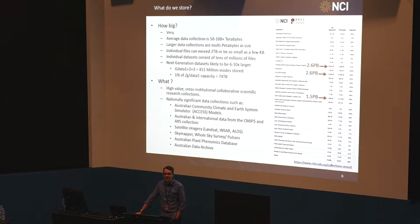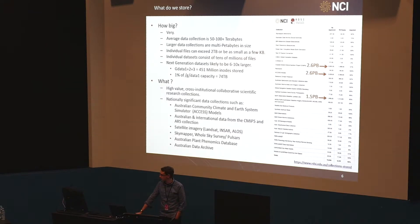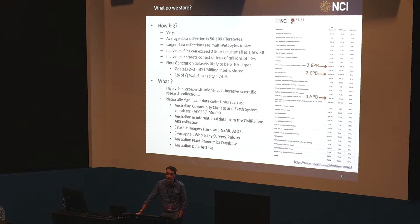One of them is currently sitting at 3.4 petabytes of GDATA3. File sizes can range from a few kilobytes to a few terabytes. We're storing 451 million items collectively across the GDATA file systems. To put that in perspective, 1% of GDATA1 is 74 terabytes - so reclaiming 10% is a significant amount of work. These data collections are also high value reference data, so when moving them between file systems, we need to ensure what we copy is accurate and that we're faithfully preserving what research communities have entrusted us with.